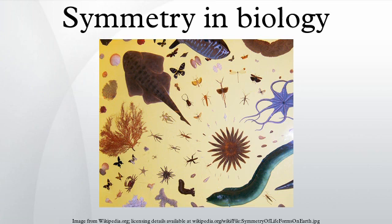A small minority, notably the sponges, exhibit no symmetry. Radial symmetry: radially symmetric organisms resemble a pie where several cutting planes produce roughly identical pieces. Such an organism exhibits no left or right sides; they have a top and a bottom surface only. Symmetry has been important historically in the taxonomy of animals. Animals with radial symmetry were classified in the taxon Radiata, which is now generally accepted to be a polyphyletic assemblage of different phyla of the animal kingdom.